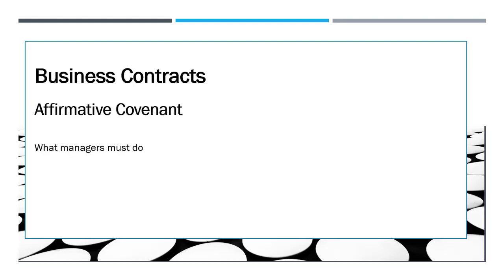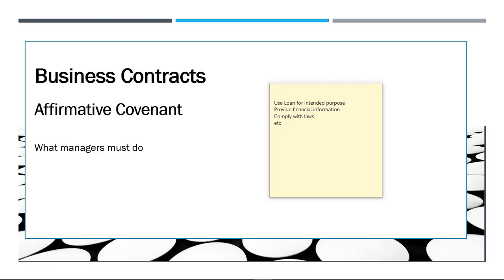One way to structure these debt covenants is through an affirmative covenant, which tells the managers what they must do. Examples of affirmative covenants include using the loan for its intended purpose — if you took out a loan to buy additional equipment for your construction division, you use the loan for that purpose. Another example is providing financial information, such as submitting quarterly reports to the bank. Another is complying with laws — if a company does something illegal, that could cause serious problems for the company's long-term viability. All of these tell managers what they need to do.